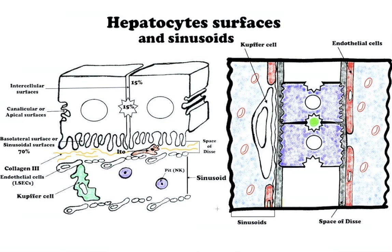Sinusoids are low-pressure vascular channels that receive blood from the terminal branches of the hepatic artery and portal vein. They are lined with endothelial cells and flanked by plates of hepatocytes. Sinusoidal endothelial cells are highly fenestrated, which allows virtually unimpeded flow of plasma from sinusoidal blood into the space of Disse. Sinusoids also house an important part of the phagocytic system and are populated by numerous Kupffer cells, a type of fixed macrophage. The space between sinusoidal endothelium and hepatocytes is the space of Disse, which contains plasma, connective tissue, collagen type 3, and hepatic stellate cells (Ito cells).